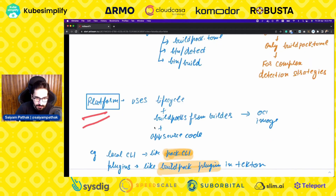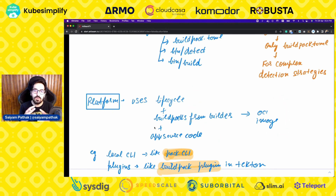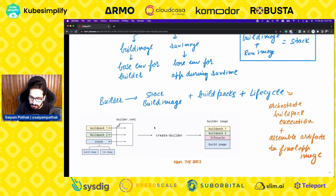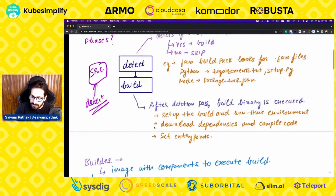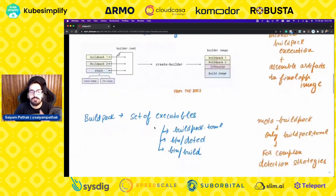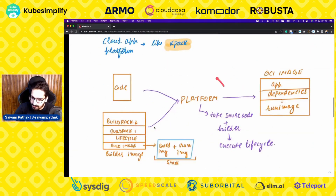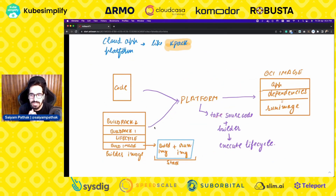Now comes the platform. It uses the lifecycle, the Buildpacks from the builders, and the application source code. The platform ties it all together — it takes your source code and builder and executes the lifecycle. The builder image has a build image containing the build and run image stack, and it converts everything to an OCI image. This is your user-facing interaction point.